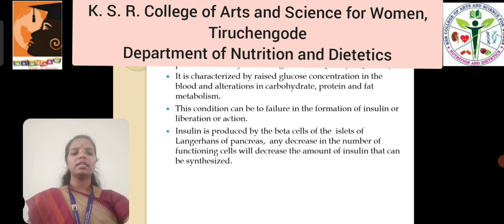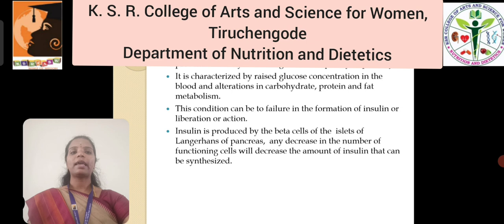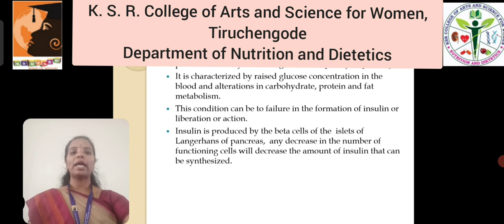Diabetes mellitus is commonly referred to as sugar. It is not a disease, it is a disorder. Diabetes mellitus is a chronic metabolic disorder that prevents the body from utilizing glucose completely or partially. It is characterized by raised glucose concentration in the blood and alteration in the metabolism of carbohydrate, protein and fat. This condition can be due to failure in the formation, liberation, or action of insulin.